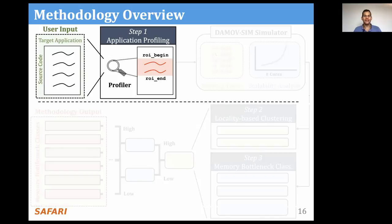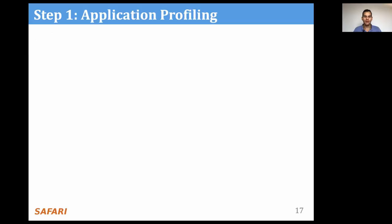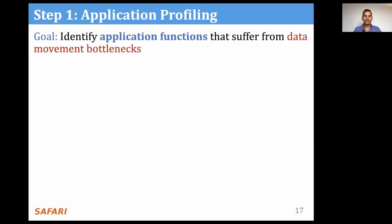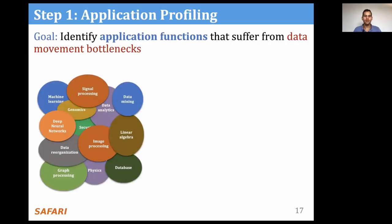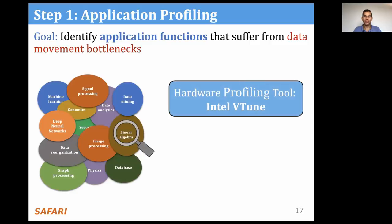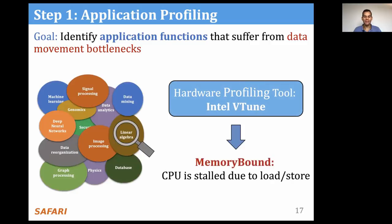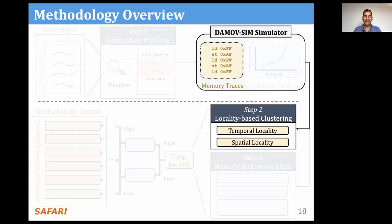Looking at step one, the goal is to identify application functions that suffer from data movement bottlenecks. To do so, we use a hardware profiling tool. In this work, we use the Intel VTune profiling tool, which provides a metric called memory bound, which defines the percentage of CPU pipeline slots that are empty due to load/store operations.